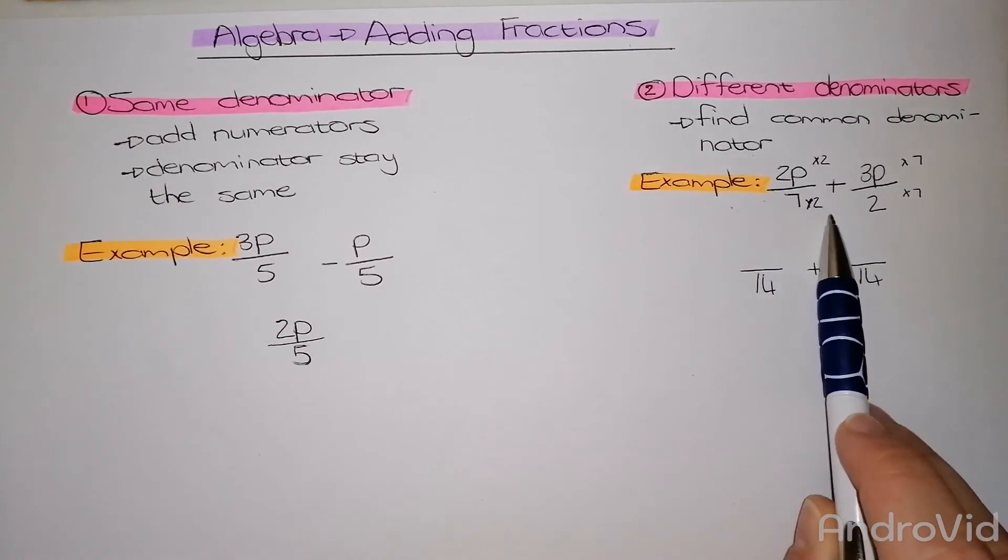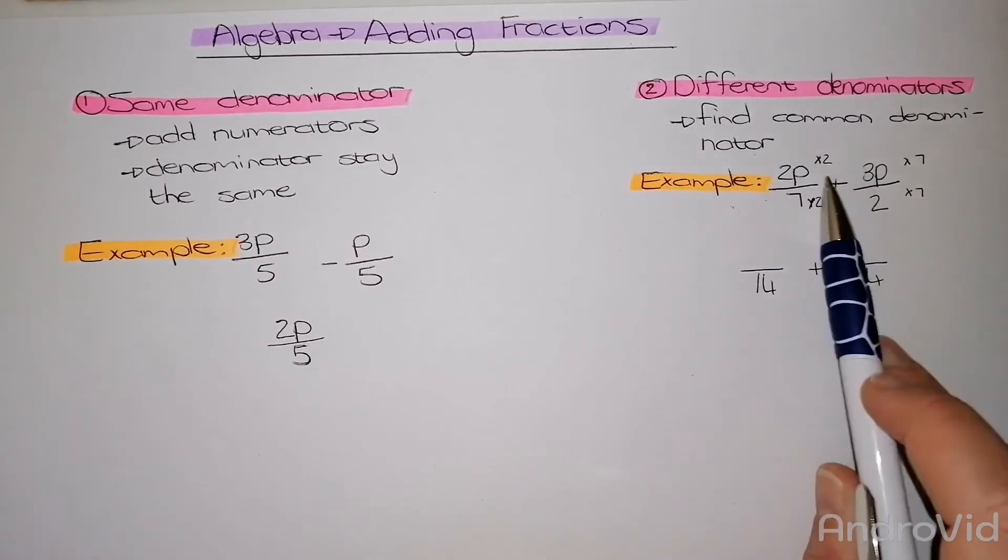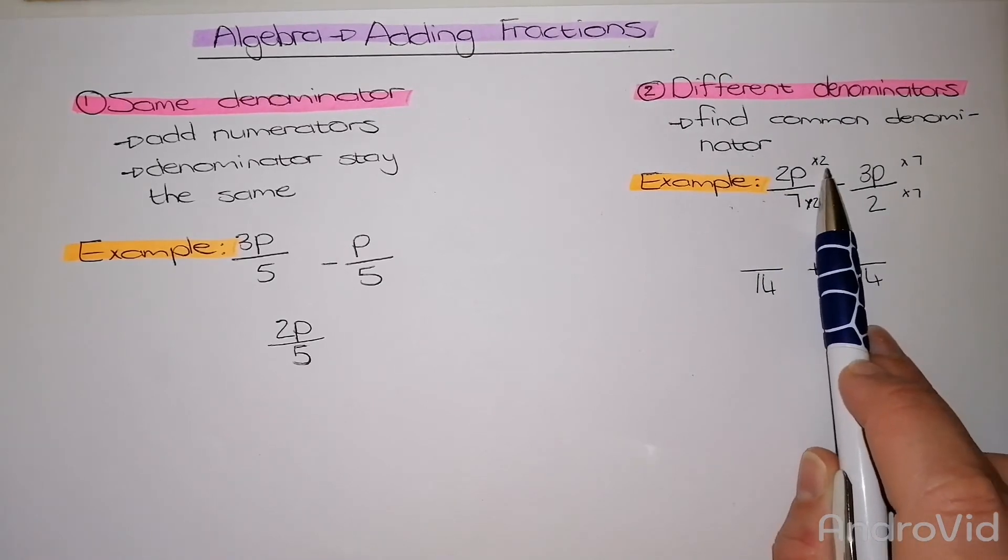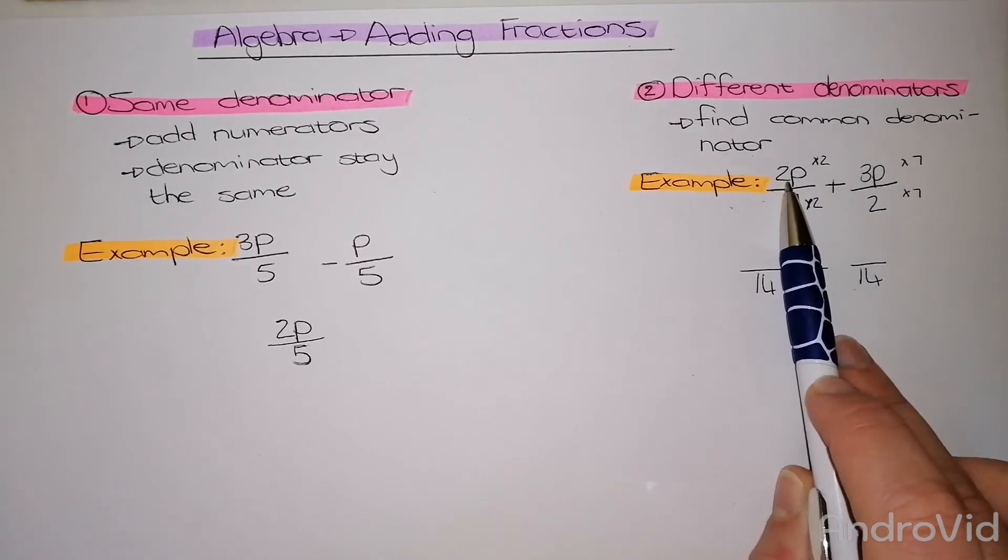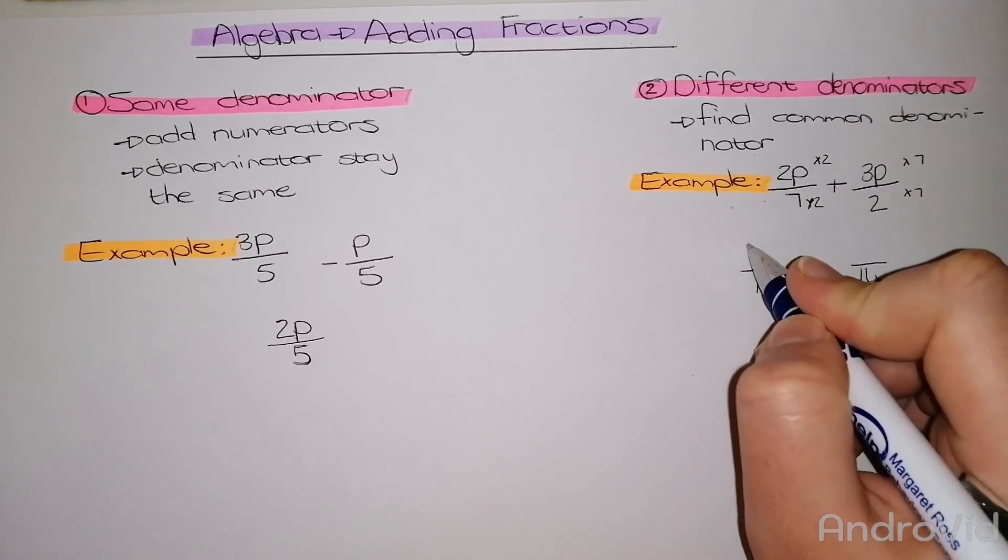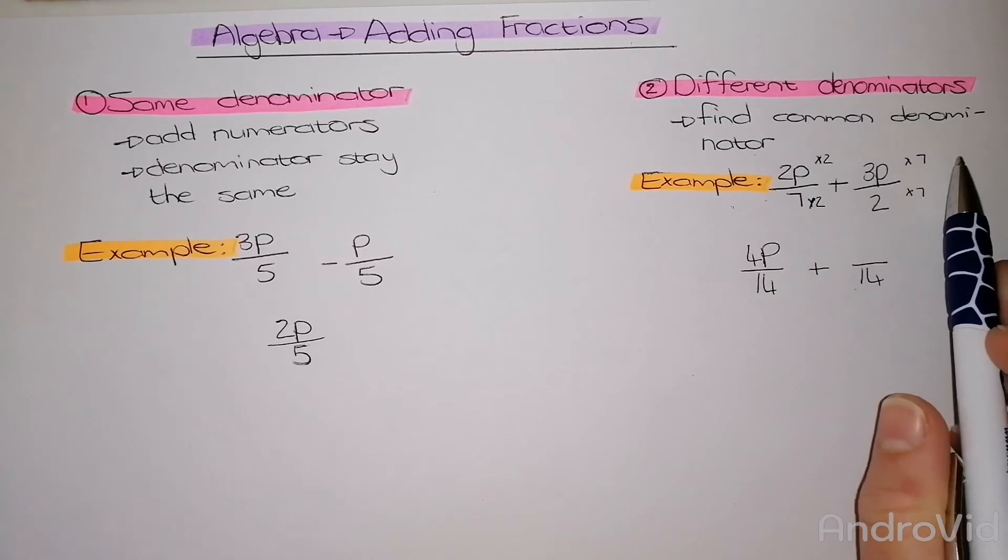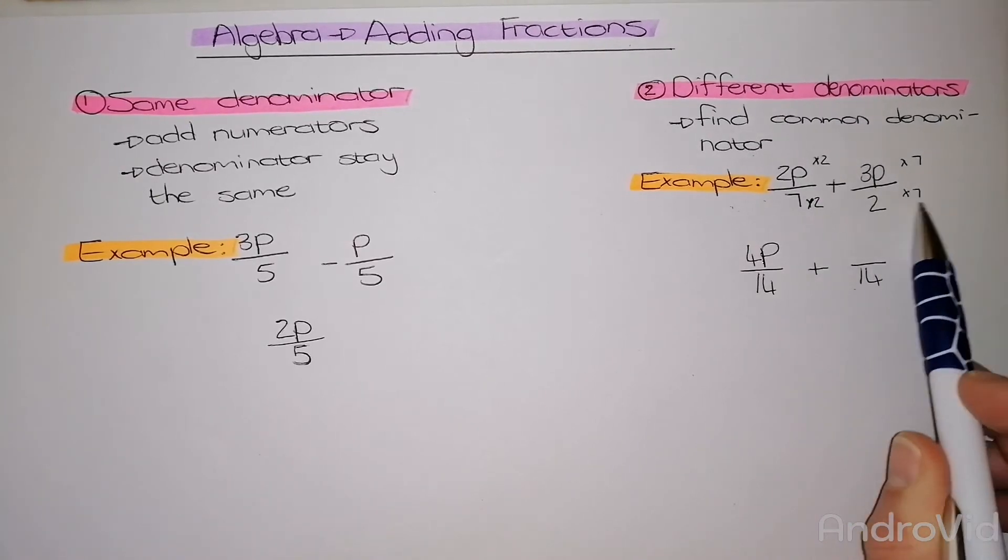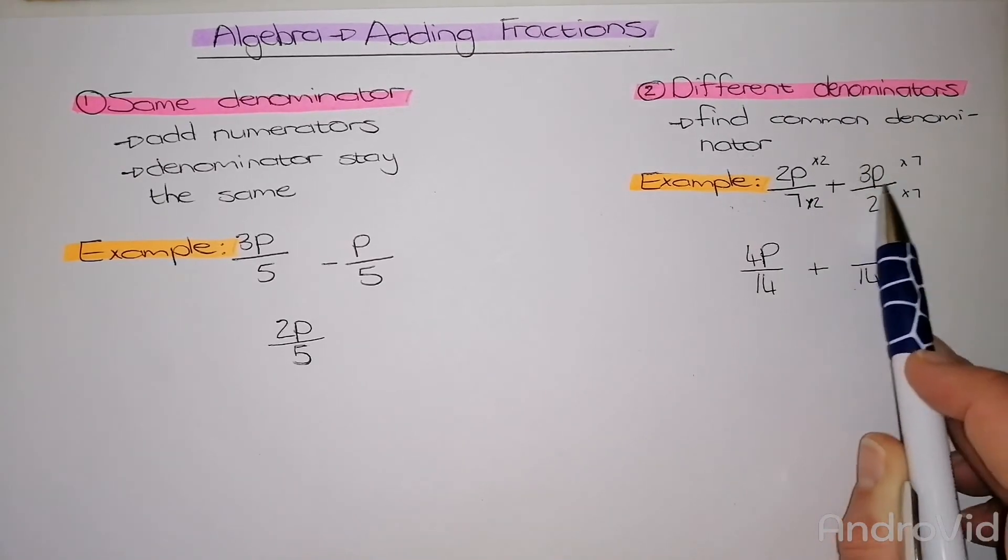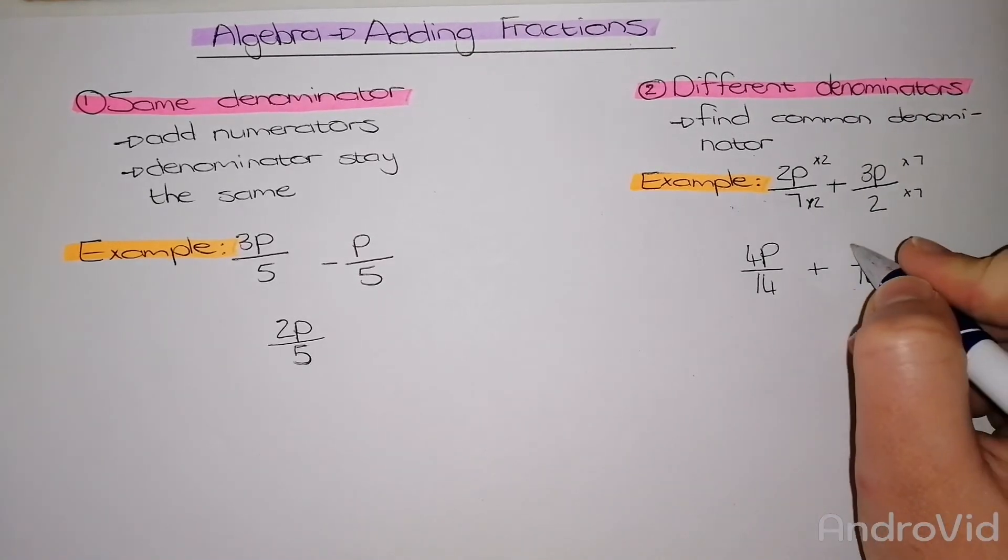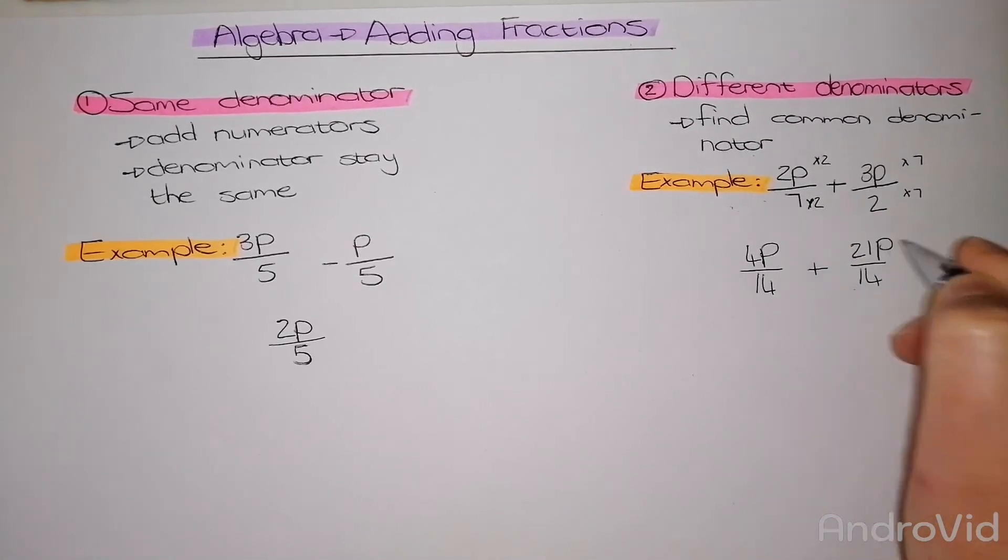I've multiplied 7 by 2 to get 14. Now I need to do the same at the top. So because I'm just multiplying by a number, I'm only going to multiply the 2 by 2, and that will give me 4P. Then I go to my next term. I had to multiply the 2 by 7, so I need to multiply the 3P by 7 as well. 3 times 7 gives me 21P.